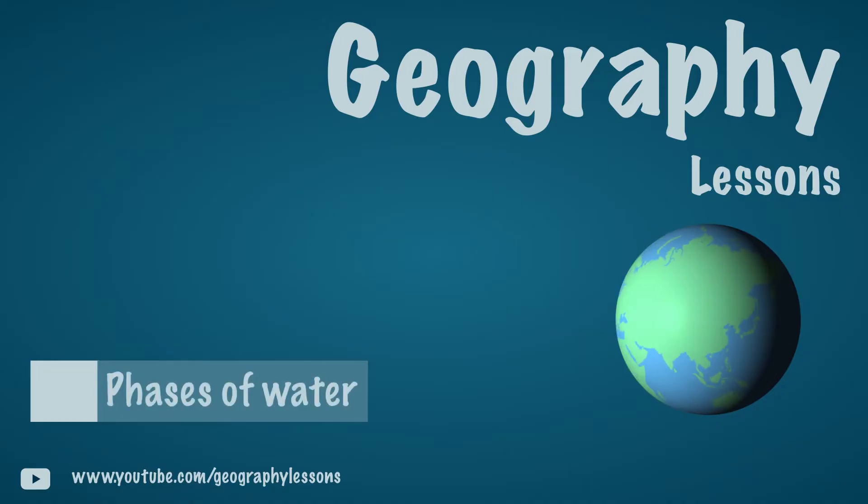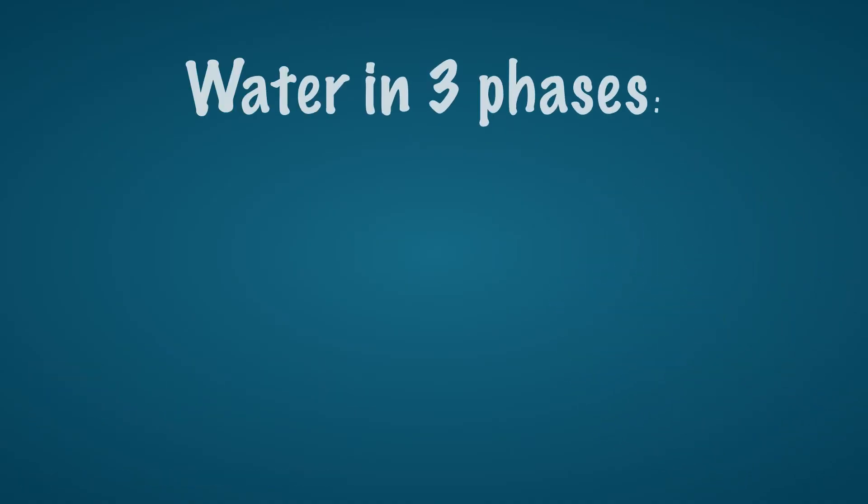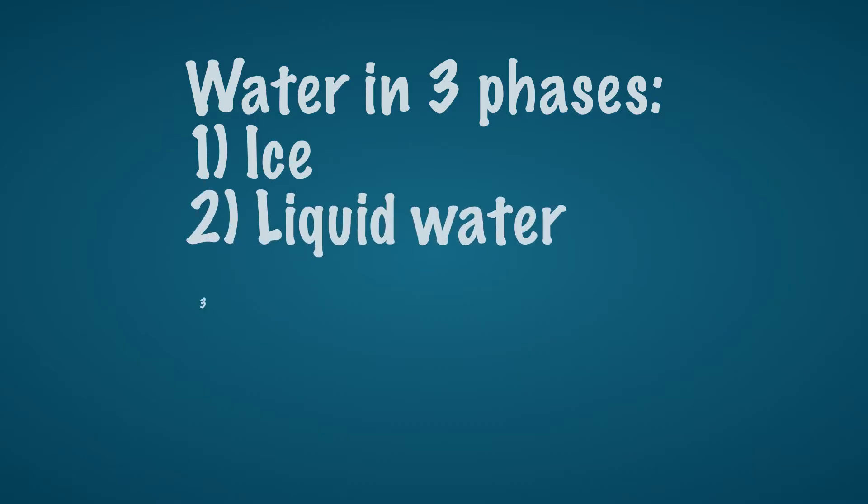Water comes in three different phases: liquid water which we drink, ice which we put in drinks to cool it, and water vapor which we cannot see but which is present in the air. These three states are explained in this video.